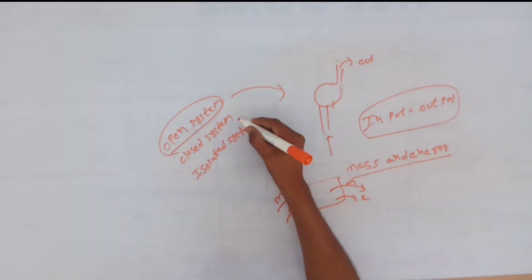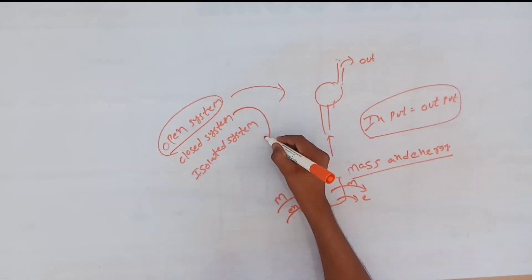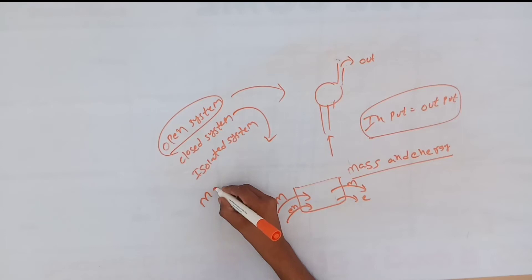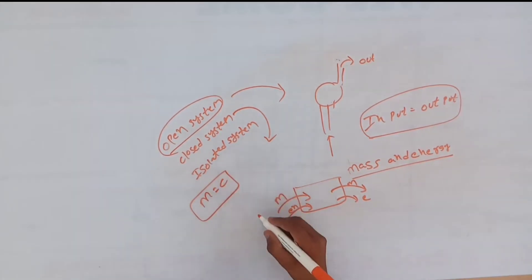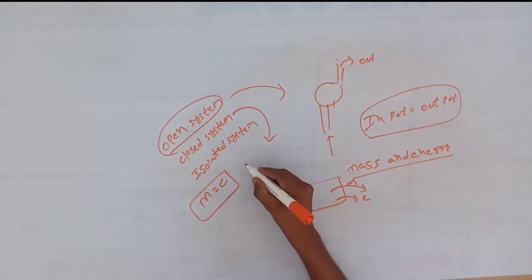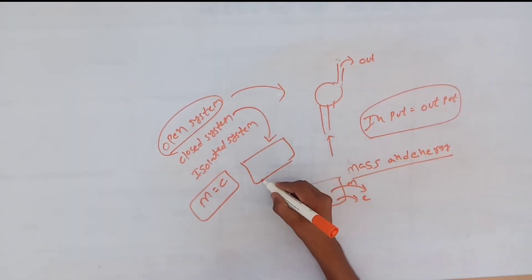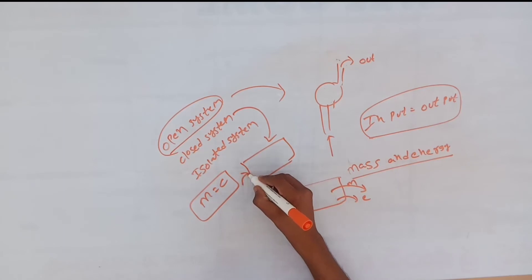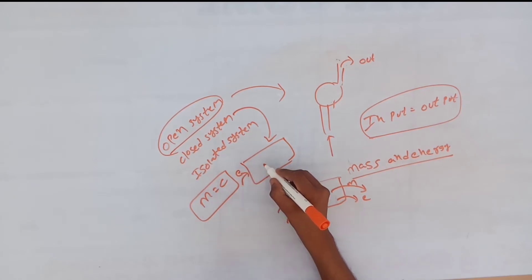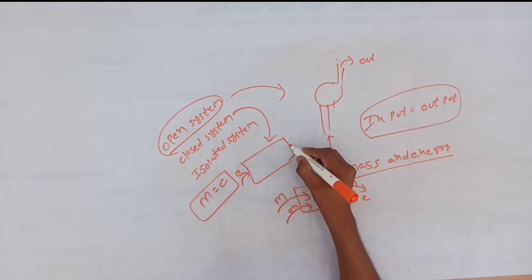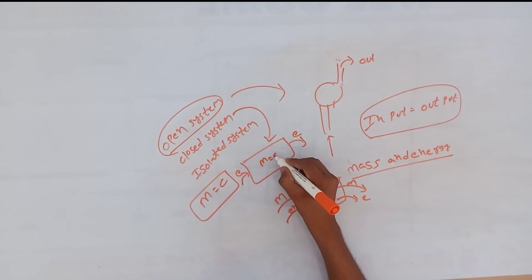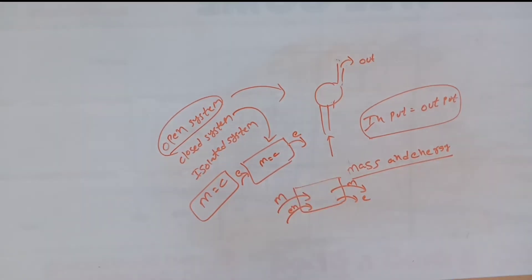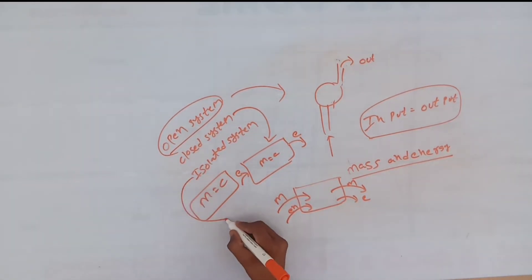In the closed system, mass is constant, but energy will transfer — energy will enter and energy will go out — but mass is constant.